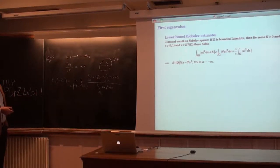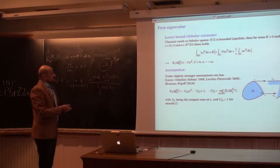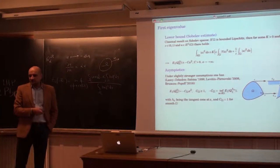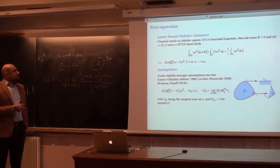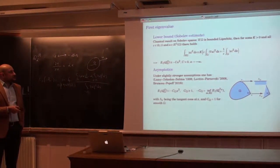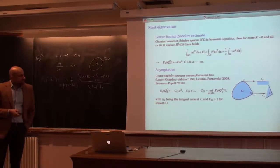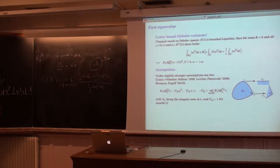Let us discuss what we can say about general principles. I assume that the domain is bounded Lipschitz. There is a very well-known estimate from the theory of Sobolev spaces. In particular, this basic estimate shows that the first eigenvalue goes to minus infinity, but the speed can be at most quadratic in α.